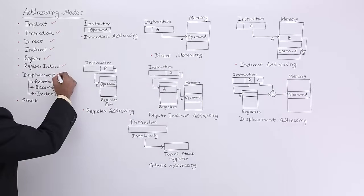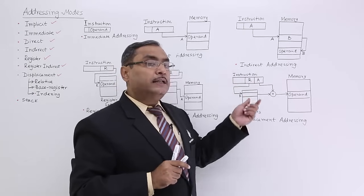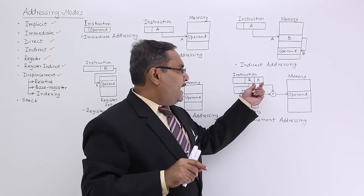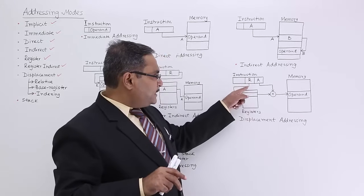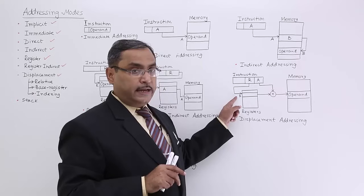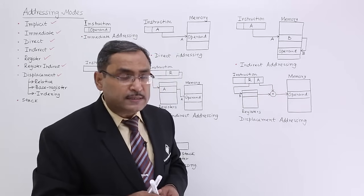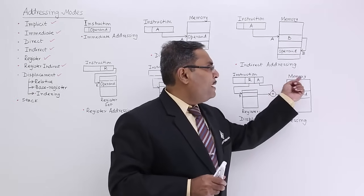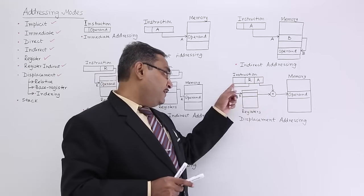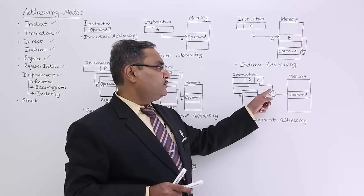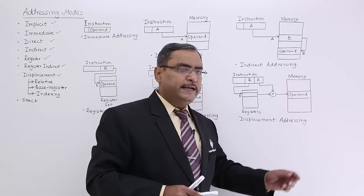Next is displacement addressing. In displacement addressing, the instruction contains the opcode plus two parts: one containing a register number and another containing an address. The selected register's content is added with the address in the instruction, forming the physical address. The physical address is then mapped onto the memory to access the operand. This is known as displacement addressing.